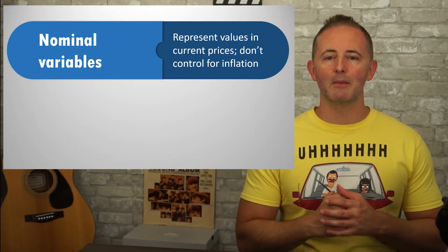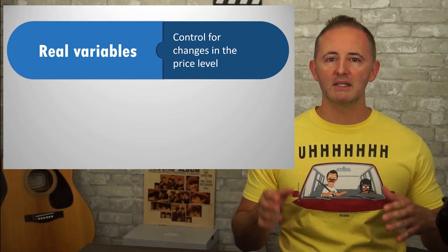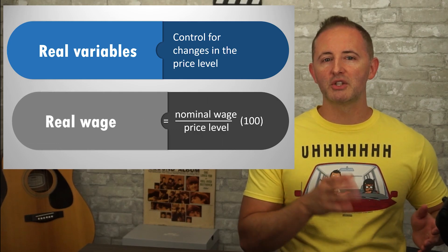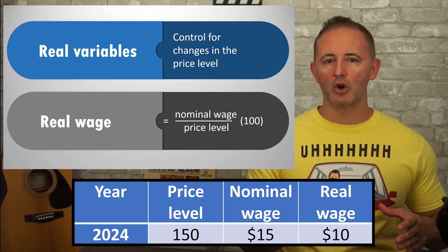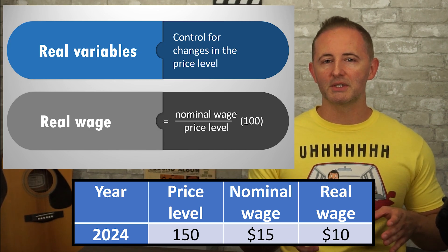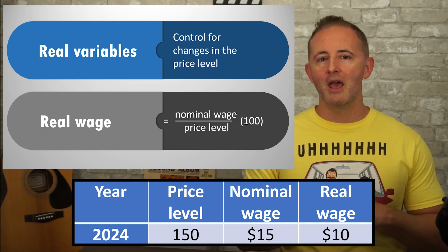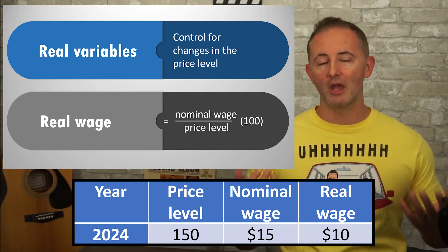This is where real variables come in. Real variables control for changes in the price level, whereas nominal variables are expressed using prices of that year. For example, real wage equals the nominal wage divided by the price level times 100. So if the price level was $150 and you're earning a nominal wage of $15, your real wage was $10. This indicates the actual purchasing power of your wage, and allows us to make comparisons across time, which we wouldn't be able to do with nominal variables.